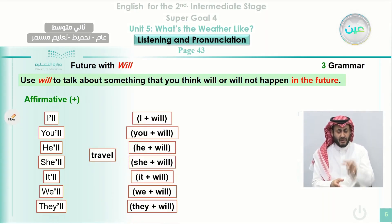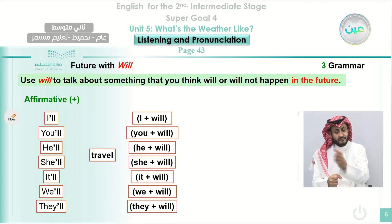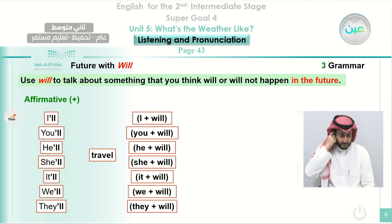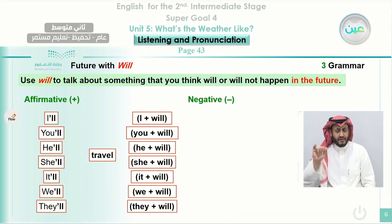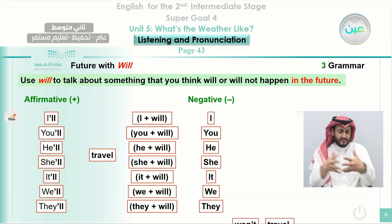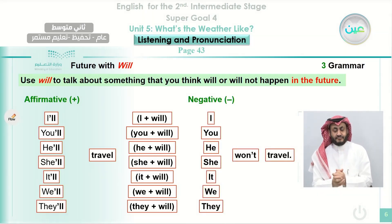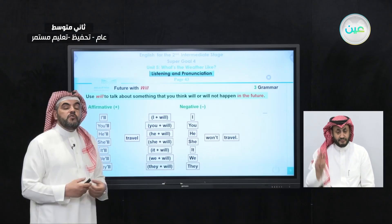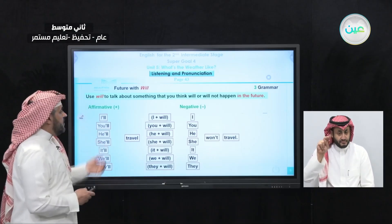For example, 'I'll travel' is a contraction of 'I will travel.' Similarly: you will, he will, she will, it will, we will, they will. In the negative form, you say 'I won't travel,' 'he won't travel,' and so on with all the pronouns.